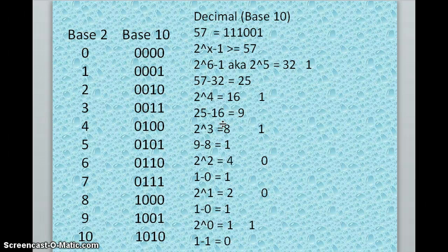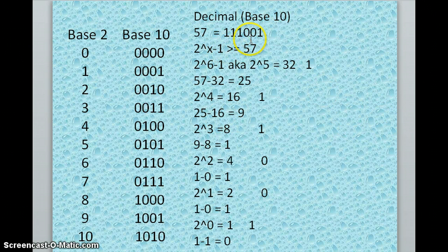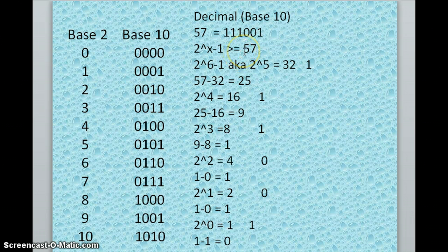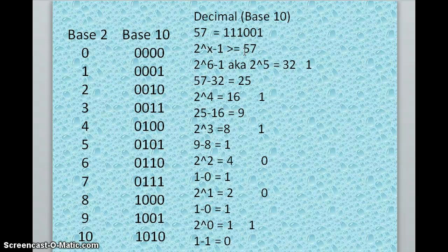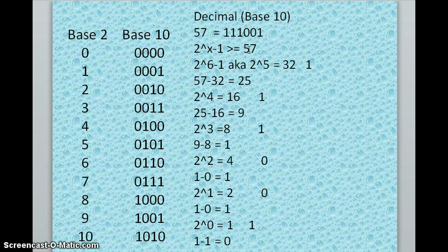So first, what we're going to do is say here's our number, 57. And we're going to say 2 to what power is going to contain this number? In other words, how many bits do I need to contain this number?